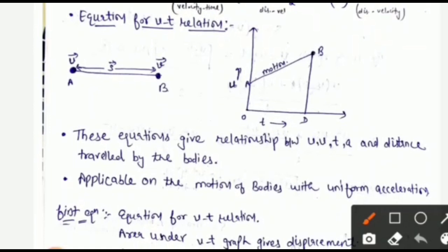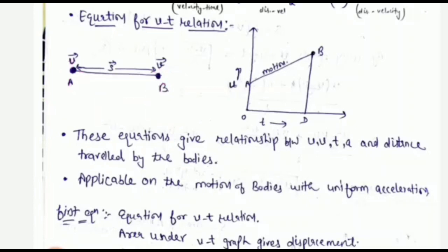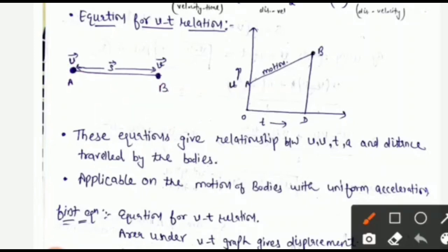We derive the equation for the velocity-time (VT) relation using the velocity-time graph. Consider a body moving from point A to point B: initial velocity is at point A, final velocity is at point B, and the distance A to B is the displacement — that is, final position minus initial position. On the graph, we take the x-axis along time and the y-axis along velocity.